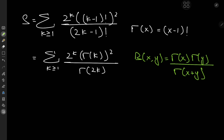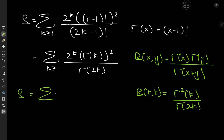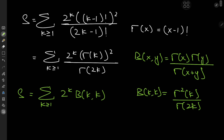In this case, we need x and y both being equal to k, because that would give us gamma squared k divided by gamma 2k. So that means the sum S is just the sum over the positive integers k of 2 to the k times the beta function evaluated at k and k. And the utility of introducing the beta function is that we can now make use of its integral representation.